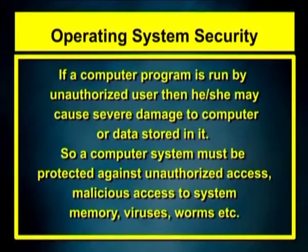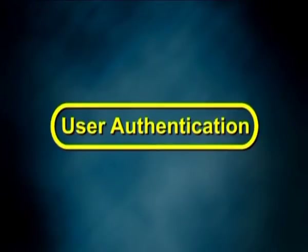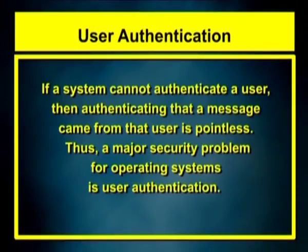If a computer program is run by an unauthorized user, then he or she may cause severe damage to the computer or data stored in it. So a computer system must be protected against unauthorized access or malicious access to system memory, viruses, worms, etc. Now we are going to discuss various operating system related security concepts. First is user authentication. If a system cannot authenticate a user, then authenticating that a message came from that user is pointless. Thus, a major security problem for operating systems is user authentication.